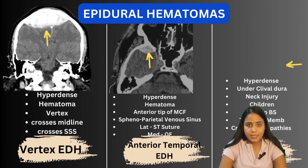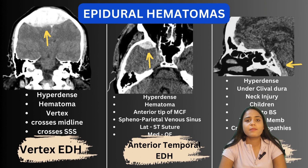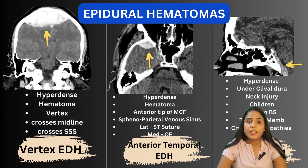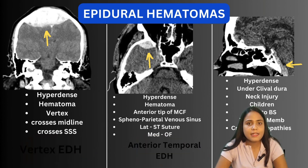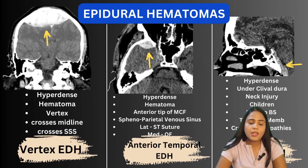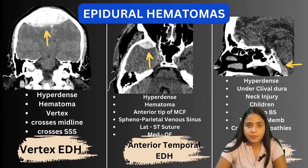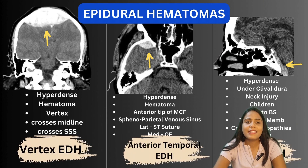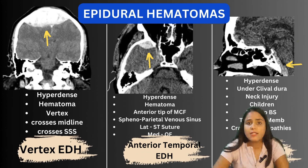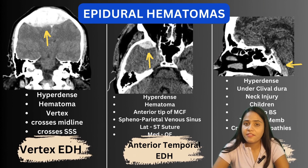The first is a vertex EDH, showing a hyperdense biconvex hematoma at the region of the vertex. The fracture causes injury to the superior sagittal sinus, and this vertex EDH can cross the midline. The second is an anterior temporal EDH, where the sinus involved is the sphenoparietal venous sinus. There is a biconvex hyperdense collection in the anterior tip of the middle cranial fossa, limited medially by the orbital fissure and laterally by the sphenotemporal suture.